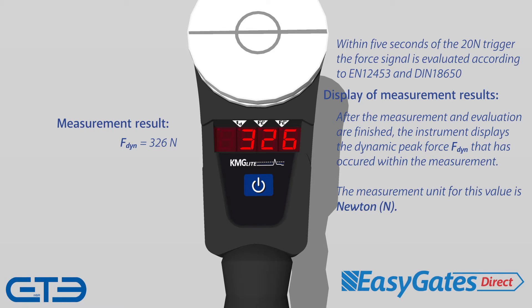Within five seconds of the 20 newton trigger, the full signal is evaluated according to EN12453 and DIN18650. After the measurement and evaluation are finished, the instrument automatically displays the dynamic peak force that has occurred within the measurement. The measurement unit for this value is in newtons — for example, here we have a dynamic peak force of 326 newtons.